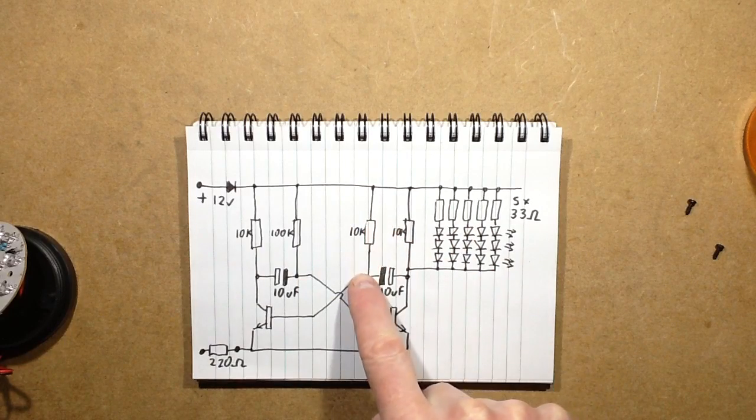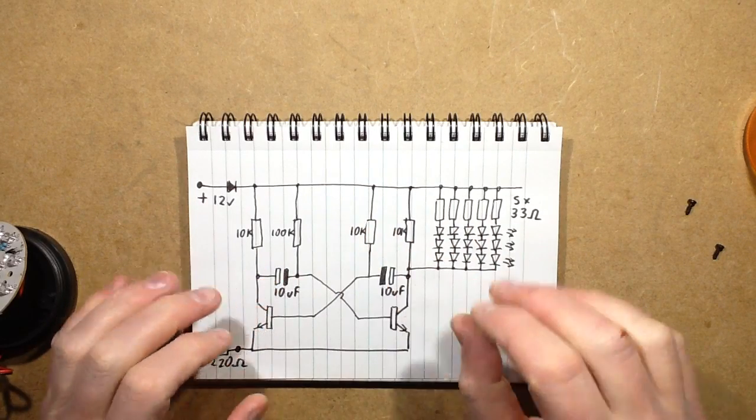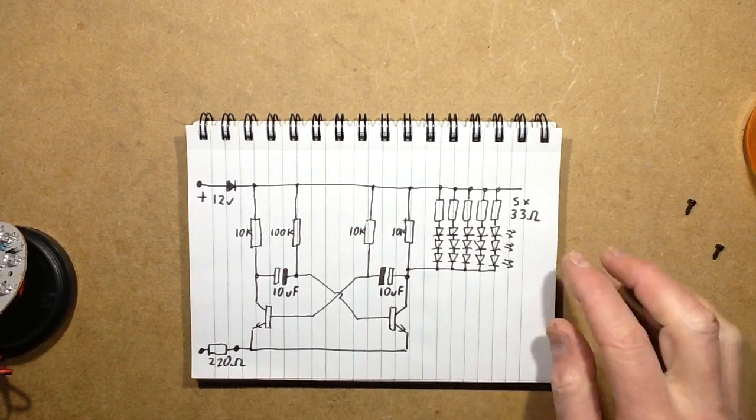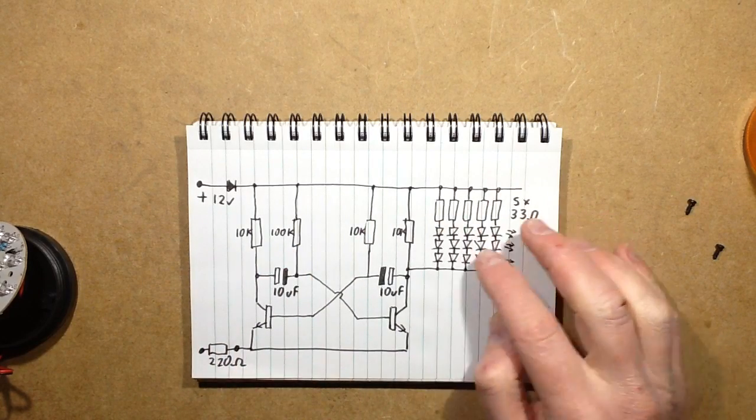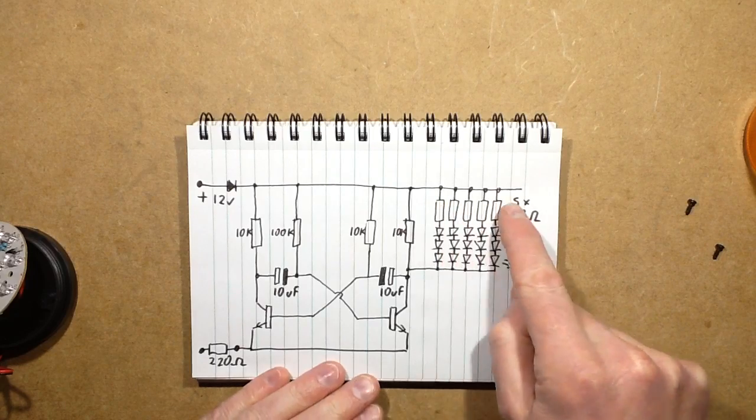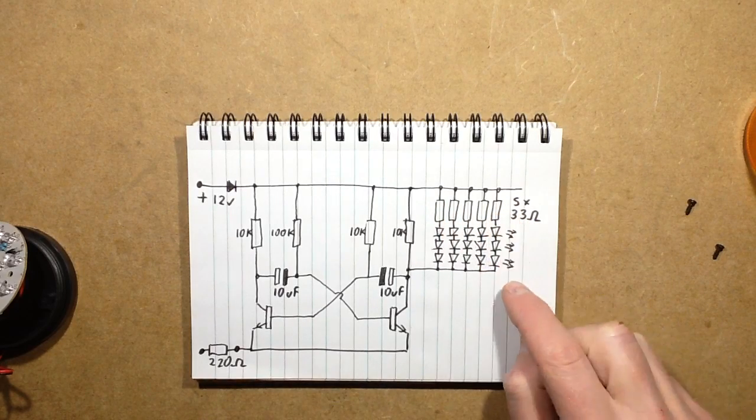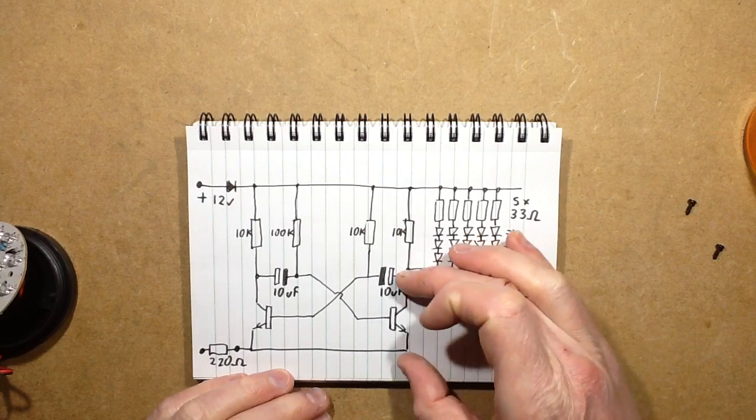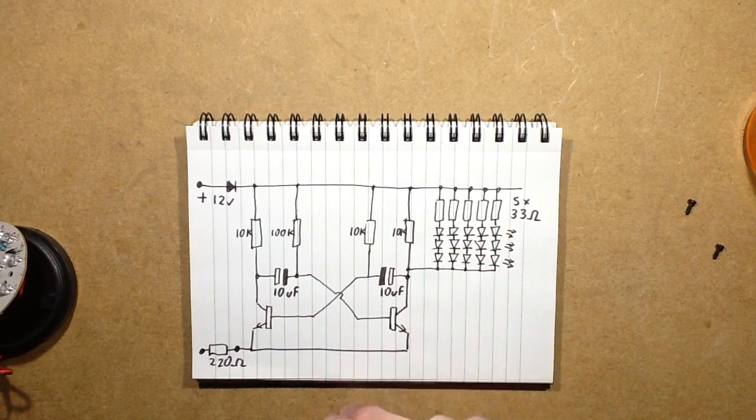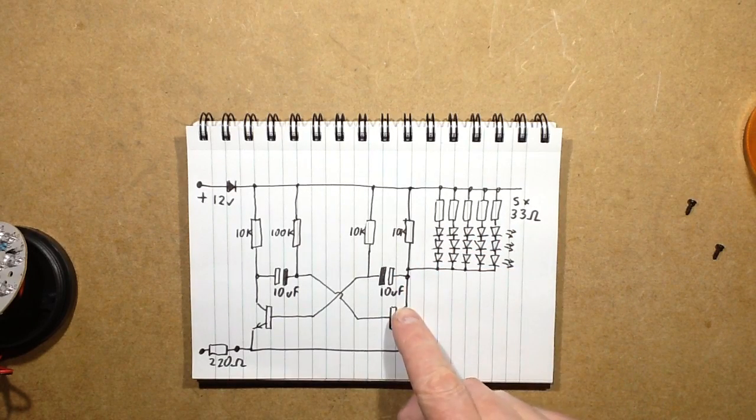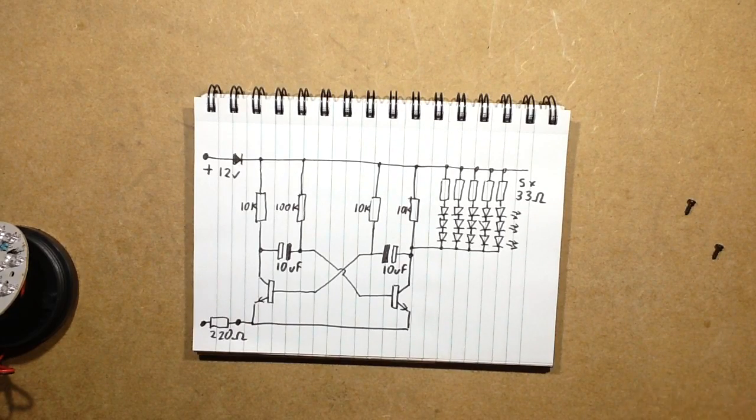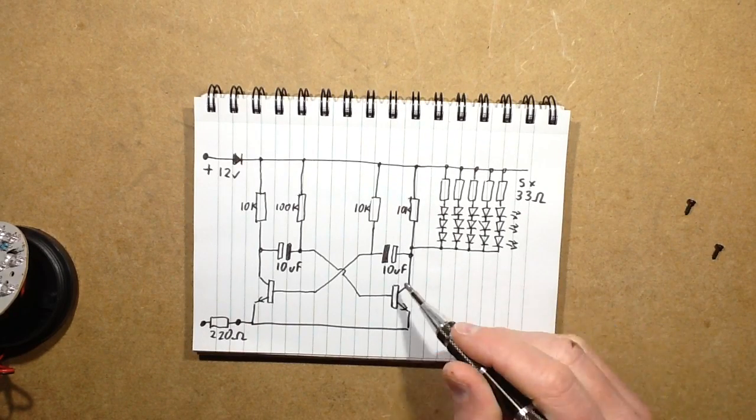To mean that when the LEDs are on they're just on briefly, and then a longer off delay set by these two resistors. The LEDs are in five circuits of three with one resistor, a 33 ohm resistor per circuit. And then the LEDs going to basically just jump onto one of the channels in the flip-flop so that they flash when that transistor turns on. I could try explaining how a flip-flop works, but it always ends up confusing. But I'll give it a rough go.